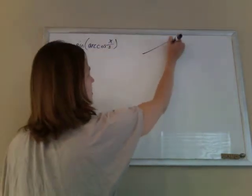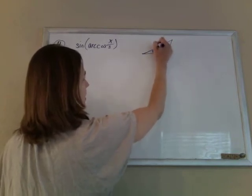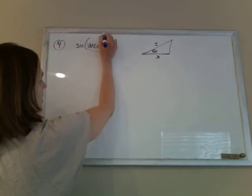So I'm going to make this a triangle problem. I'm going to draw an angle whose cosine is x over 3, whose adjacent over hypotenuse is x over 3. This whole thing is my angle.